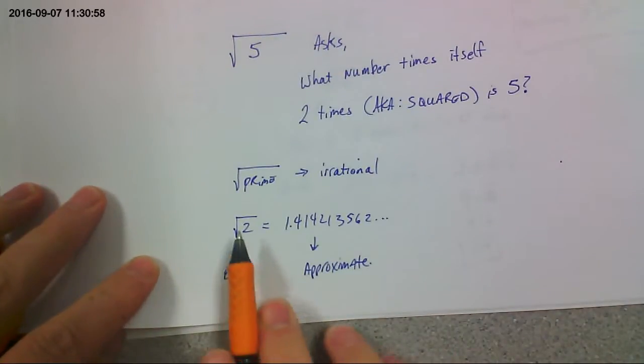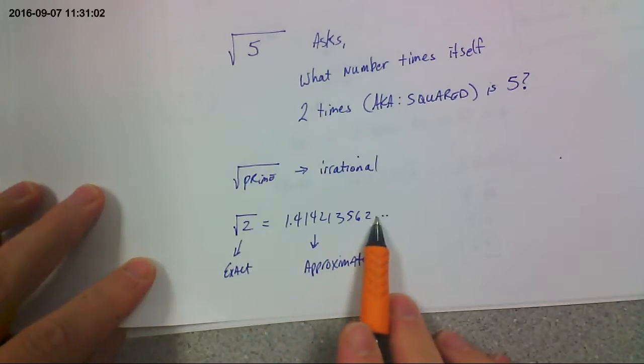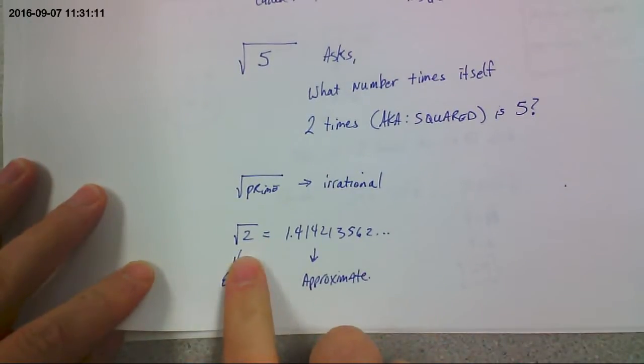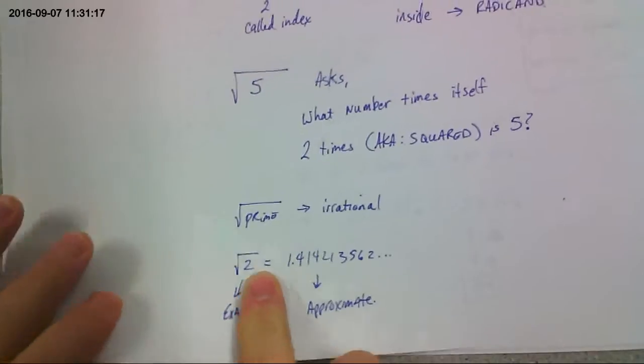Now here's an example of an irrational number. Square root of two is exact. The approximation would be 1.4. Actually, the decimal just keeps continuing forever. It never repeats. No pattern, nothing. So this is exact. Anything with a decimal would be an approximation of this irrational number. When you end up with an irrational number, that's how you know you're done simplifying a square root.